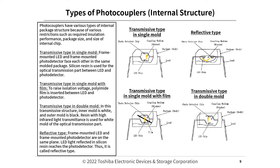Types of photocouplers — internal structure. Photocouplers have various internal package structures due to restrictions such as required insulation performance, package size, and internal chip size. Transmissive type in single mold: frame-mounted LED and frame-mounted photodetector face each other in the same molded package; silicon resin is used for the optical transmission part. Transmissive type in single mold with film: polyamide film is inserted between LED and photodetector to raise isolation voltage. Transmissive type in double mold: inner mold is white and outer mold is black; resin with high infrared light transmittance is used for the white mold. Reflective type: LED and photodetector are on the same plane; LED light reflected in silicon resin reaches the photodetector.